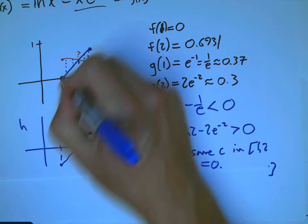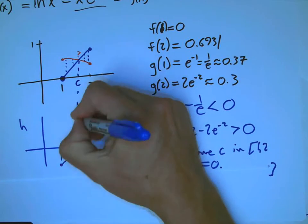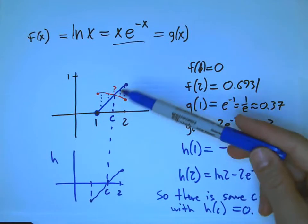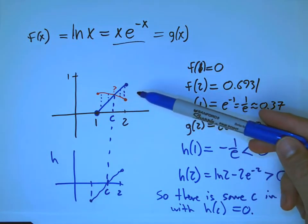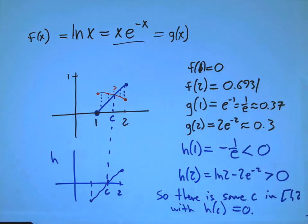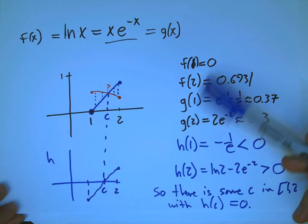And what do we know? h of C equals zero. That's the same thing as saying that f of C equals g of C. And we've shown that there must be some mystery C where these two things cross. This is a very powerful method because we could not solve this. We don't know what the C is using algebra, but we've shown it must exist.